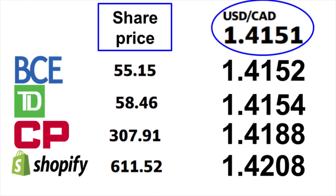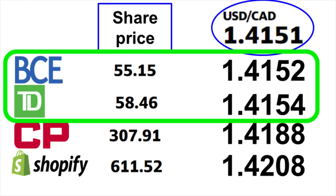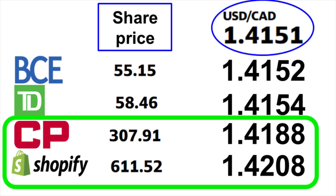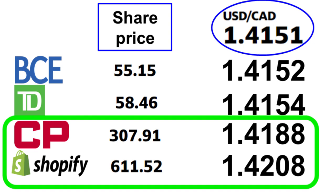One huge observation from checking different dual-listed companies is that the larger the share price, the bigger your advantage is with the foreign exchange — though I'm not entirely sure why. With TD and BCE, which have lower share prices, you get very close to the actual exchange rate. Meanwhile, with the higher share prices of CP and Shopify, you actually get a more advantageous foreign exchange rate that's higher than the actual rate. So that's all for this video.